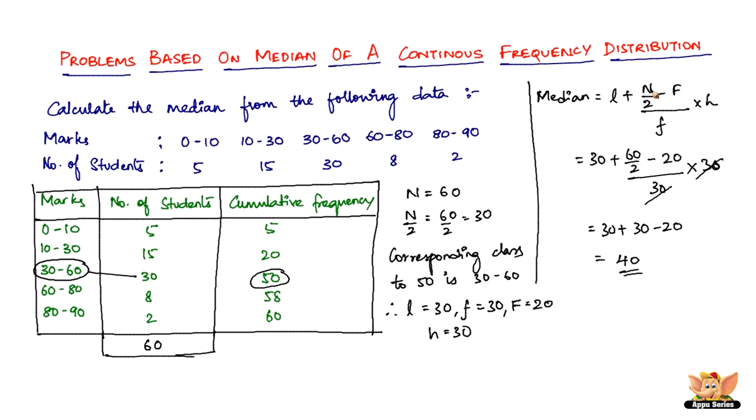And then substitute all of them in this formula for median, which is L plus n by 2 minus capital F divided by small f times h. You solve it, you get the median. So it's as simple as that. So not very complicated. So this ends this problem as well as this video.